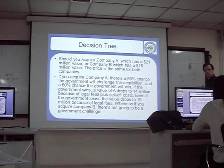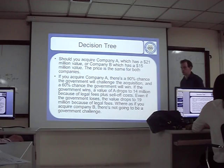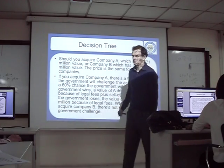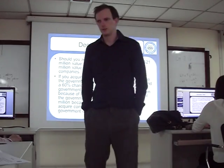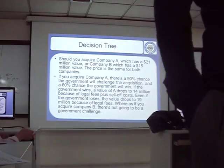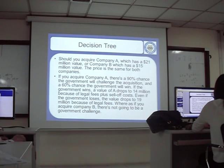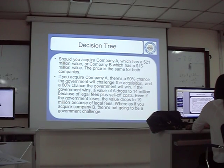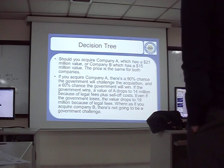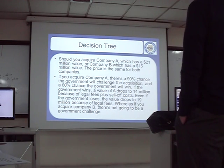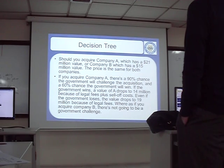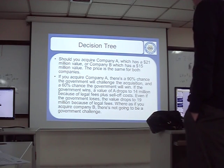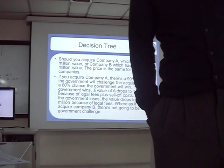If you acquire Company A, there's a ninety percent chance the government will challenge the acquisition — sometimes the government doesn't allow one company to buy another because it's anti-competitive and the company gets too big. There's a sixty percent chance the government will win that challenge. If the government wins, the value of A drops to fourteen million due to legal fees and sell-off costs. Even if the government loses, the value drops to nineteen million because of legal fees. If you acquire Company B, there will be no government challenge.